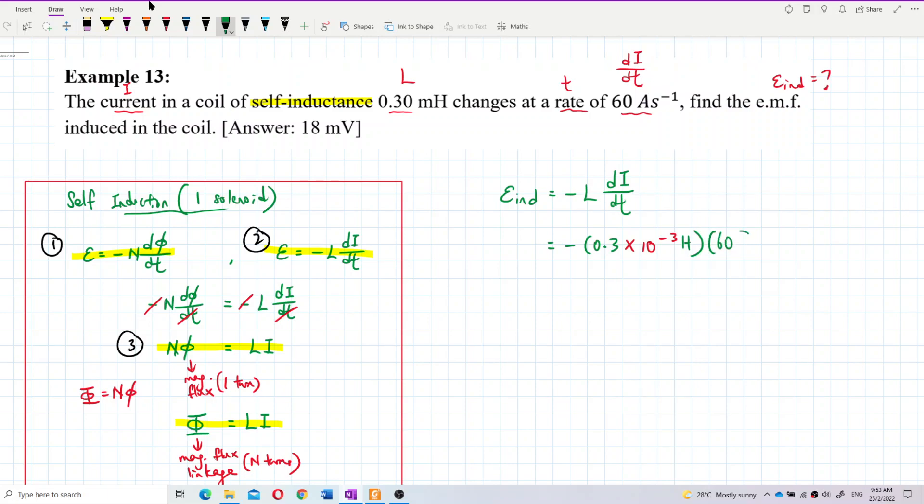Let's calculate. 0.3 exponent negative 3 multiply 60. So the answer is 0.018 volt, negative 0.018 volt.